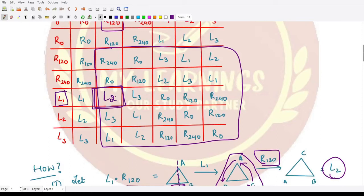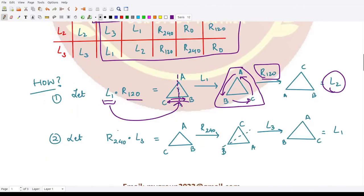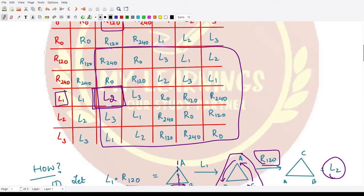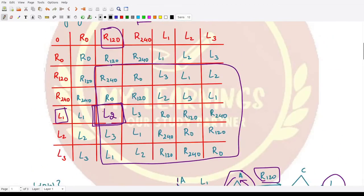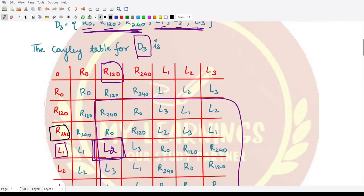In a similar manner, you can write all the elements. For example, let's take another case: R240 with L3. We need to check what would come here.